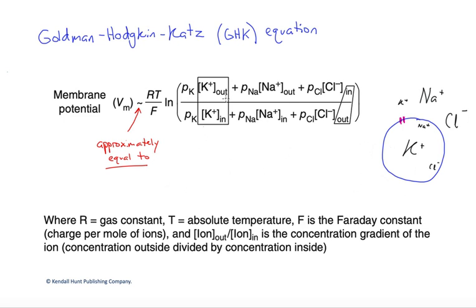If either of those two things is zero, if the gradient is zero, we're multiplying by zero, and of course we could leave it out. If the permeability were zero, we would also be multiplying by zero.